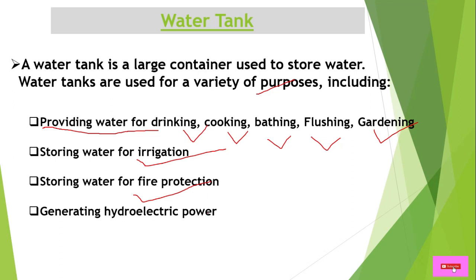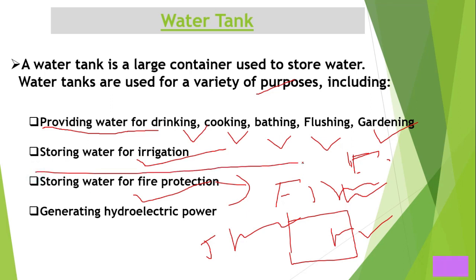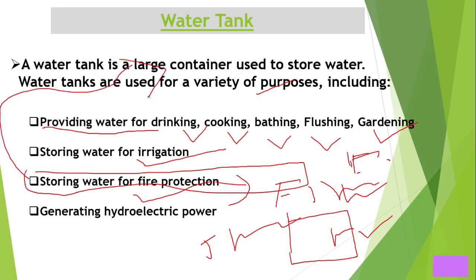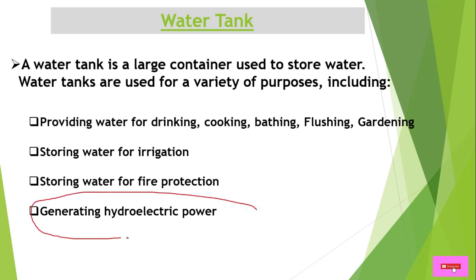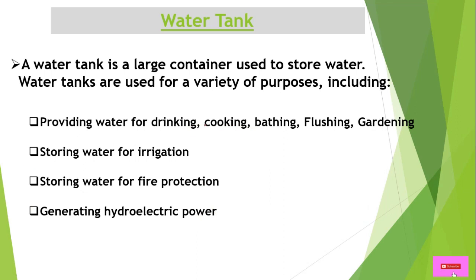Water tanks are also used for fire protection in firefighting systems. These are called calorifier tanks used in firefighting systems where we have pumps like jockey pump, main electrical pump, main diesel pump, hydrant jockey pump, and hydrant main pumps. Tanks are also used in hydroelectric power plants.